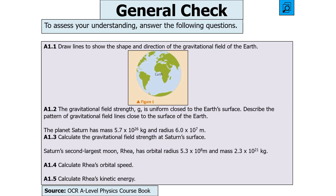The next question says: draw lines to show the shape and direction of Earth's gravitational field; the field strength is uniform close to the surface — describe the pattern of field lines; Saturn has mass 5.7 × 10²⁶ kg and radius 6 × 10⁷ m — calculate the gravitational field strength at its surface; then Saturn's moon Rhea has orbital radius 5.3 × 10⁸ m and mass 2.3 × 10²¹ kg — calculate Rhea's orbital speed and then its kinetic energy. Pause the video now.